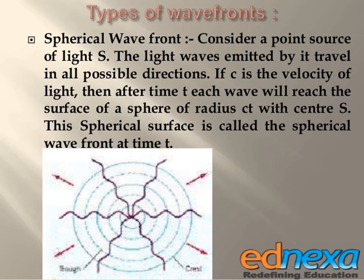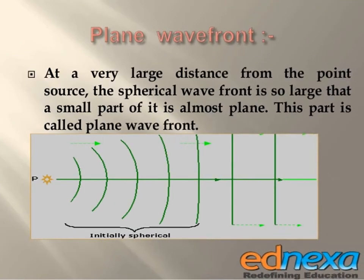This spherical surface is called the spherical wavefront at time T. At a very large distance from the point source, the spherical wavefront is so large that a small part of it appears almost plane.